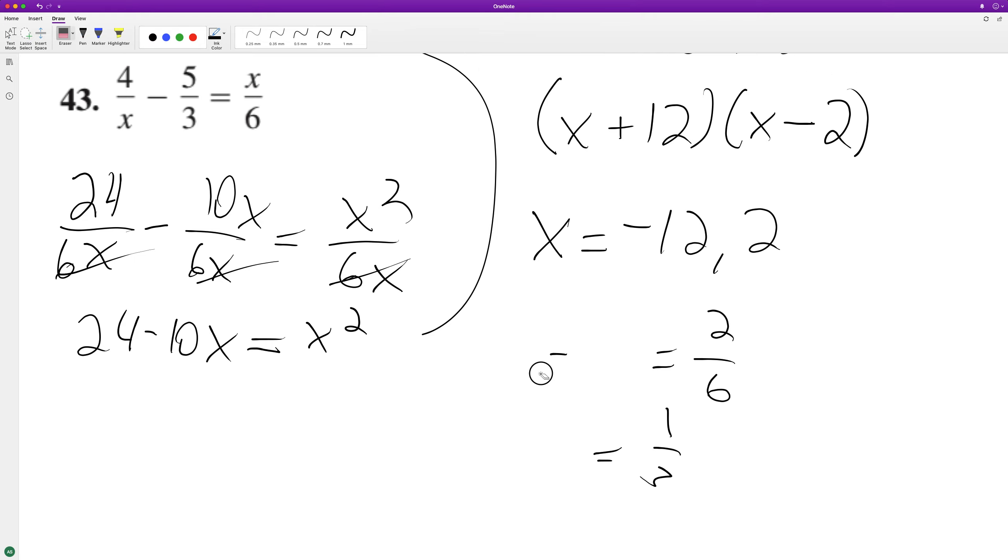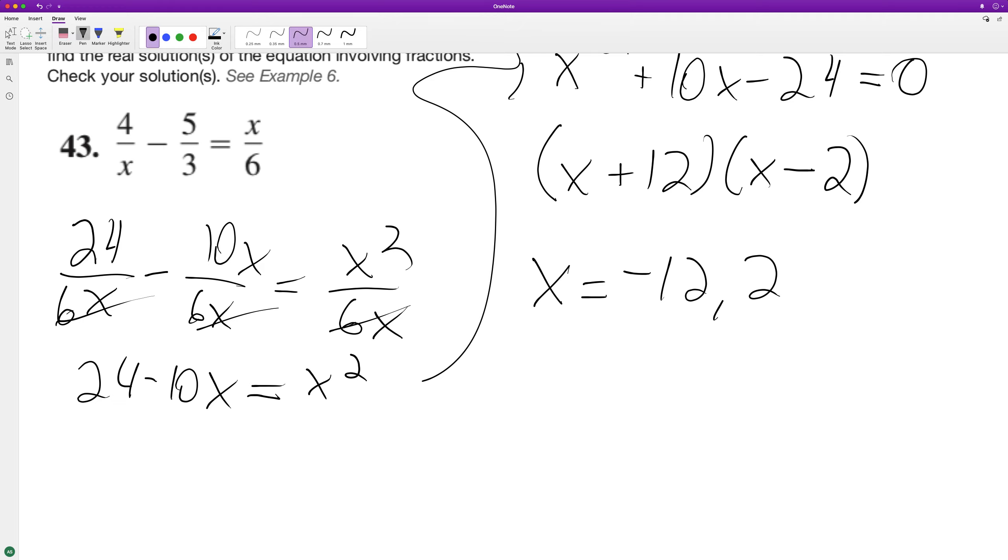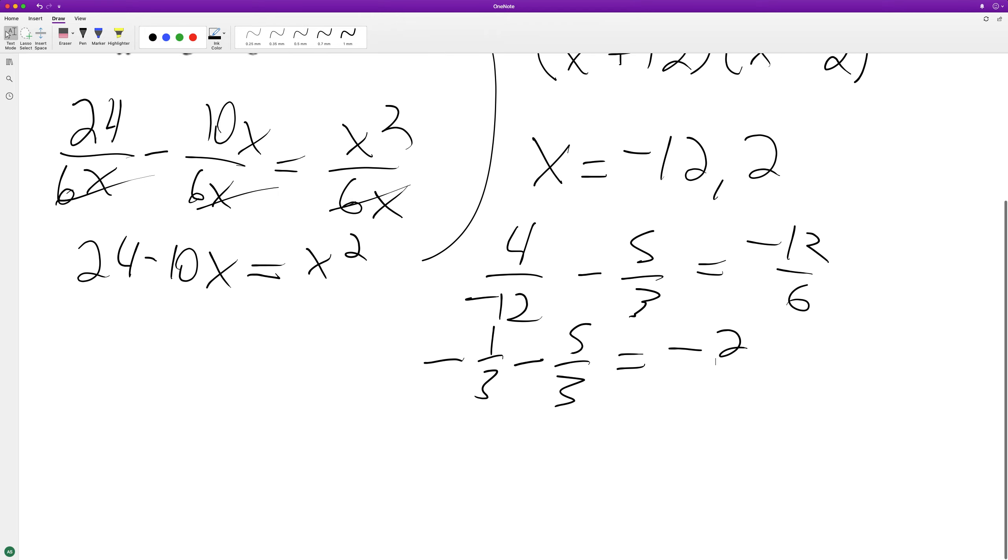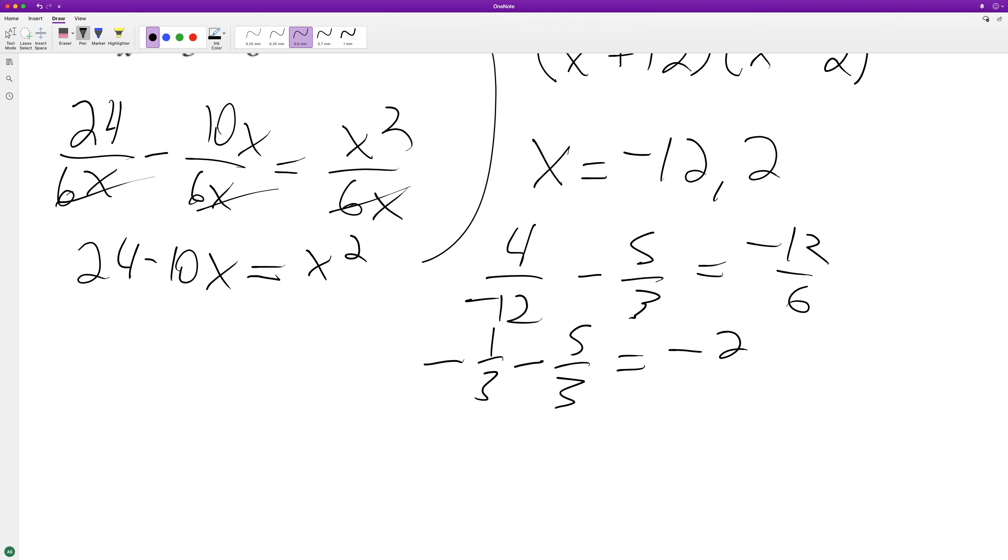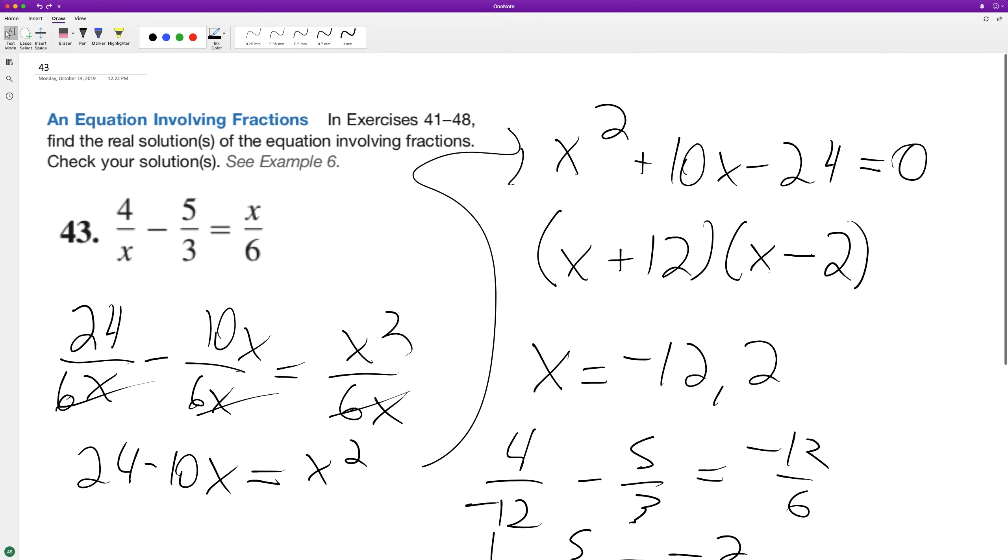So for negative 12, 4 divided by negative 12 minus 5 divided by 3 equals negative 12 divided by 6. This is negative 1 third minus 5 thirds, which is negative 6 over 3, which does equal negative 2, which matches what's over here. That means that both negative 12 and 2 check out, and that means they're both a solution.